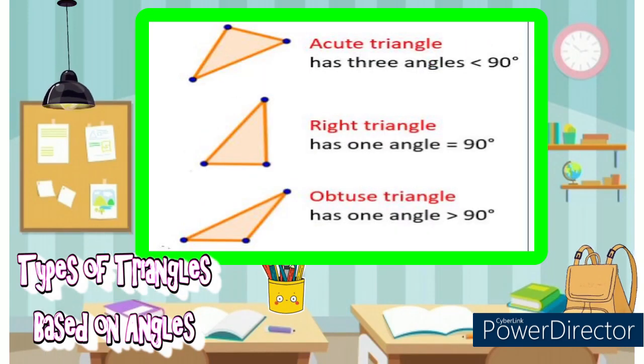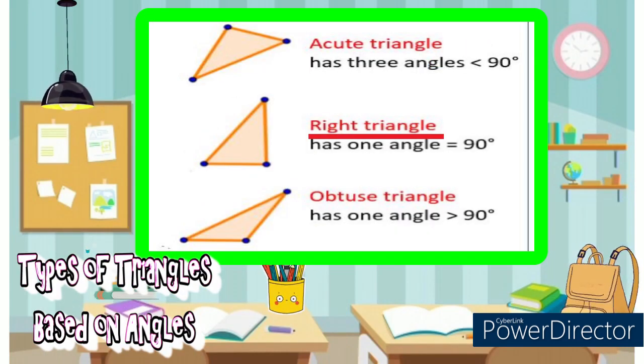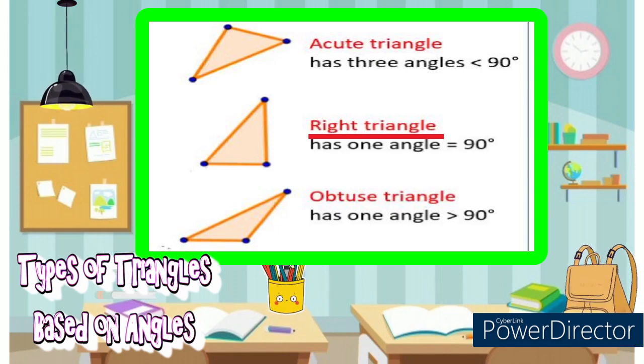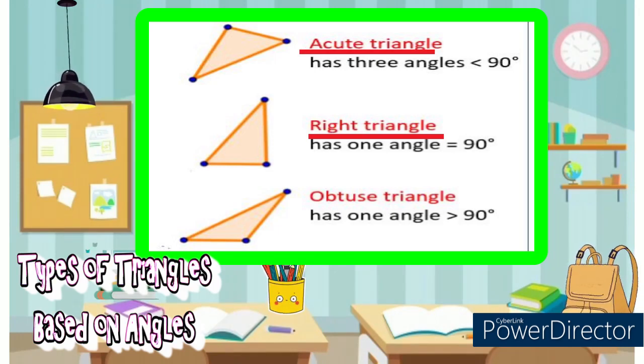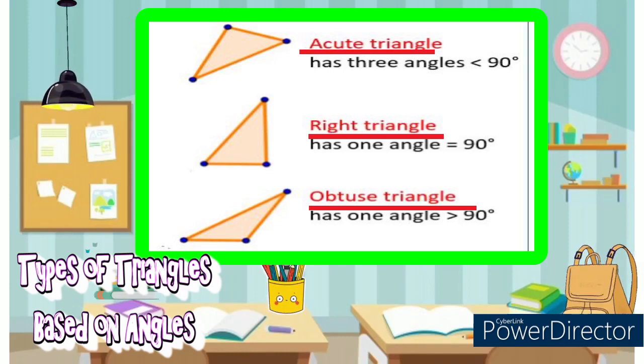Based on angles: right triangle, a triangle with one right angle measures 90 degrees. Acute triangle, all the angles of an acute triangle are less than 90 degrees. Obtuse triangle, one of the angles of an obtuse triangle is greater than 90 degrees.